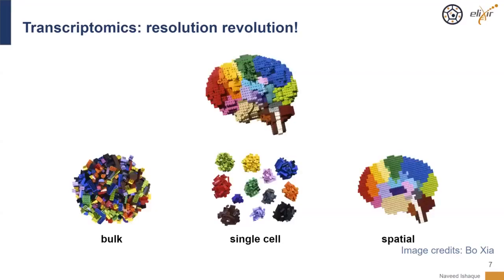However, in the last few years, we've seen the rise of spatial transcriptomic methodologies. These capture gene expression of cells but also retain their spatial information. This allows you to look both into how compositions within spatial niches are changing, and also any gene expression changes associated with whatever phenotype you would like to look into.